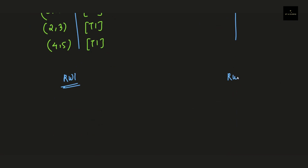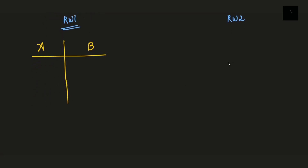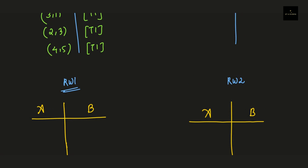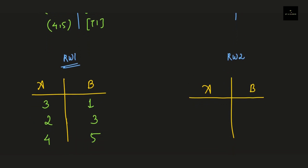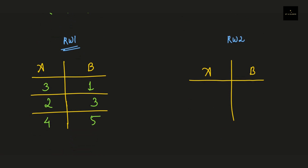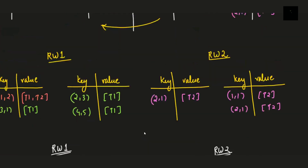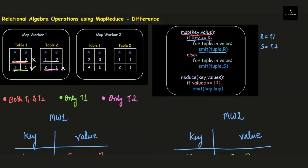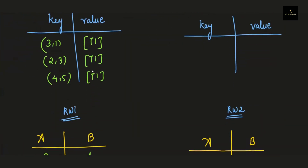Now we write the final result from both reducer workers. Our original tables had two attributes a and b. The keys are in the form of tuples: 3,1 gives a=3, b=1; 2,3 gives a=2, b=3; 4,5 gives a=4, b=5. Reducer worker 2 is empty. This is the final solution after applying the MapReduce algorithm for the difference operation. You can verify with the manual method and you will get the same answer.